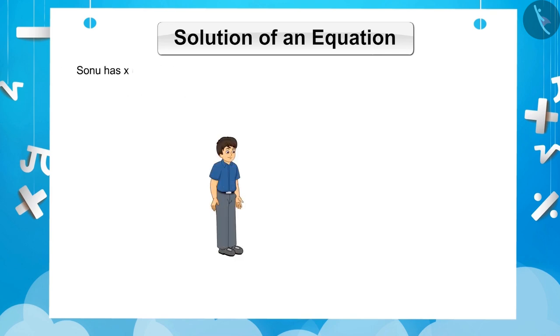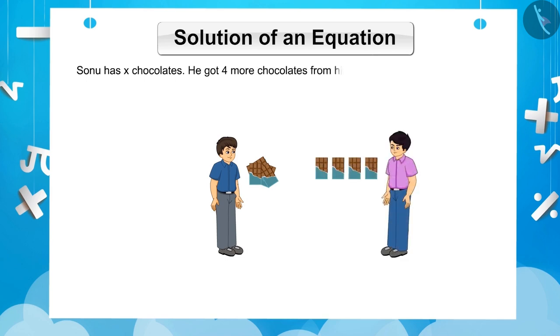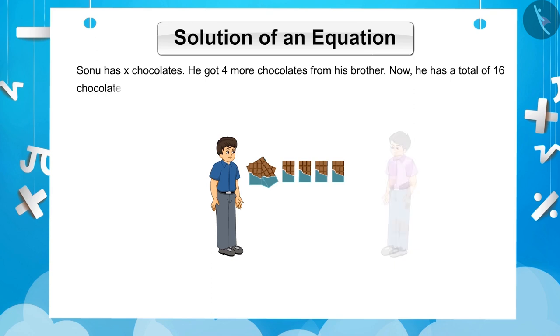Sonu has X chocolates. He got four more chocolates from his brother. Now, he has a total of 16 chocolates. Can you tell me how many chocolates he had before? Can you represent this situation in algebraic form? Please try it.